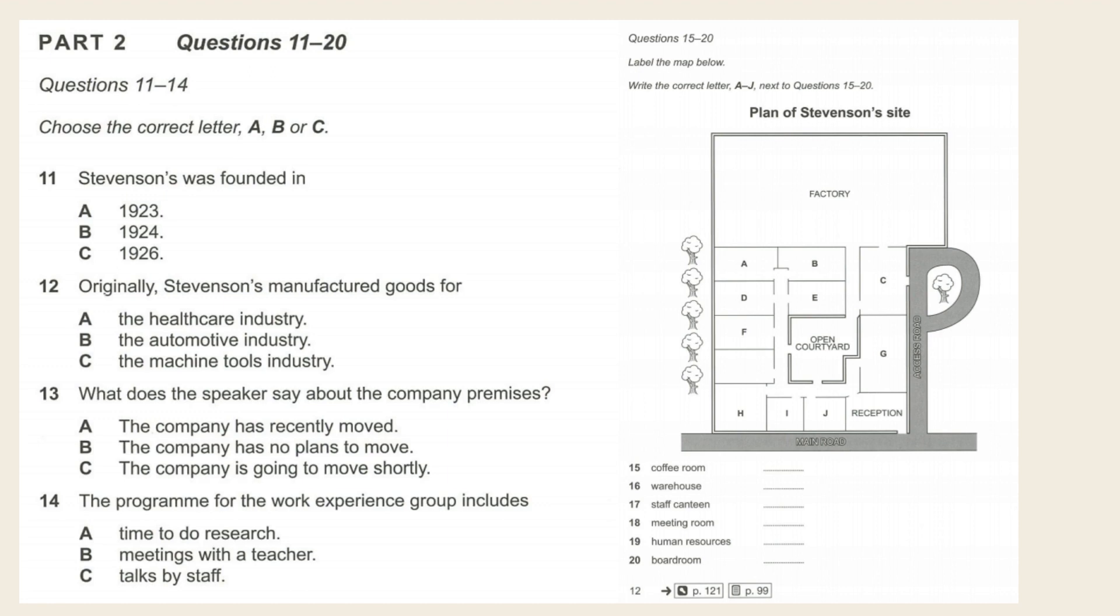Okay, now I'll briefly help you to orientate yourselves around the site. As you can see, we're in the reception area, which we try to make attractive and welcoming to visitors. There's a corridor running left from here, and if you go along that, the door facing you at the end is the entrance to the coffee room. This looks out onto the main road on one side and some trees on the other, and that'll be where you meet each morning.